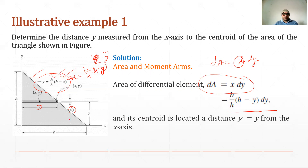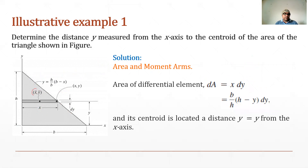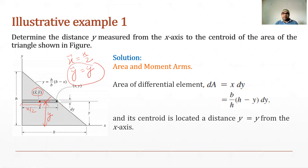We now find x-approx and y-approx, the coordinates of the centroid of this finite element. x-approx equals x/2, since the centroid of the rectangular strip is at its midpoint. y-approx equals y, the distance of the strip from the x-axis. Since we need to find y-bar, our main value of concern is y-approx = y.